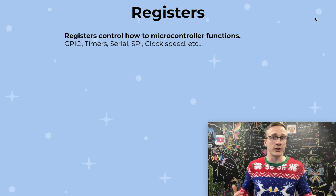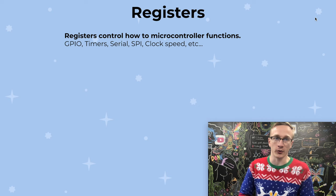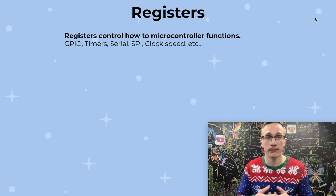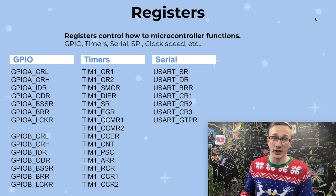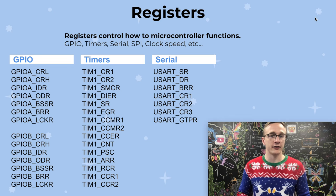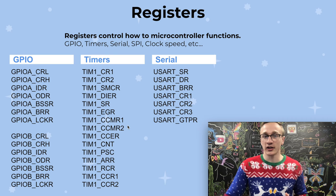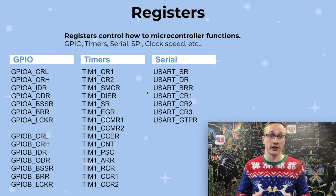So in general, what are registers and how do we know where they live in memory? Registers control everything about how the microcontroller works — from GPIO, turning pins on and off, all the way to timers or pulse width modulation, and even communication such as serial or SPI. All of these registers are documented in the datasheet, or rather the reference manual. The names of these registers are often abbreviated, so they might look a little intimidating. By storing specific numbers in these data registers, it controls how the microcontroller works.